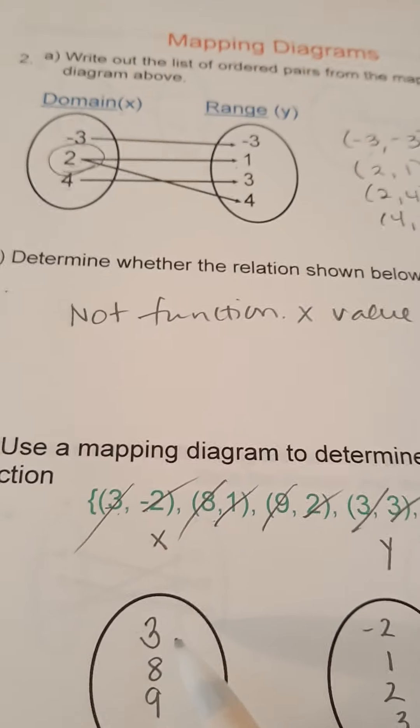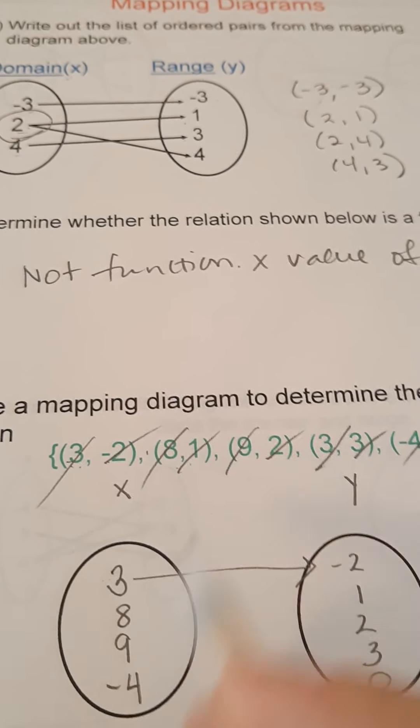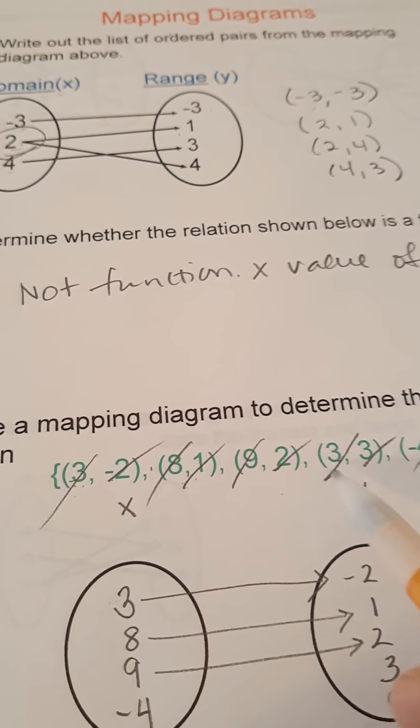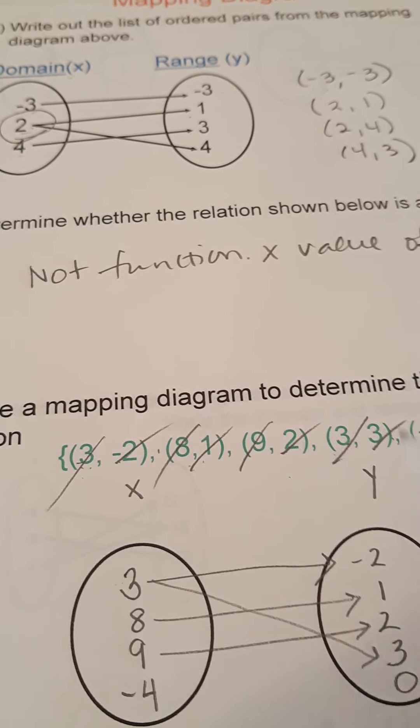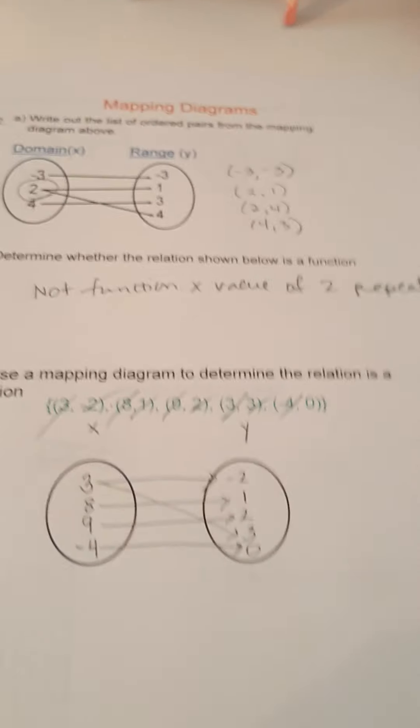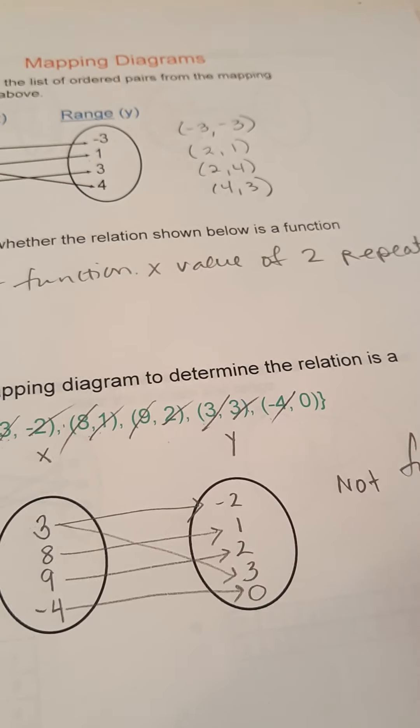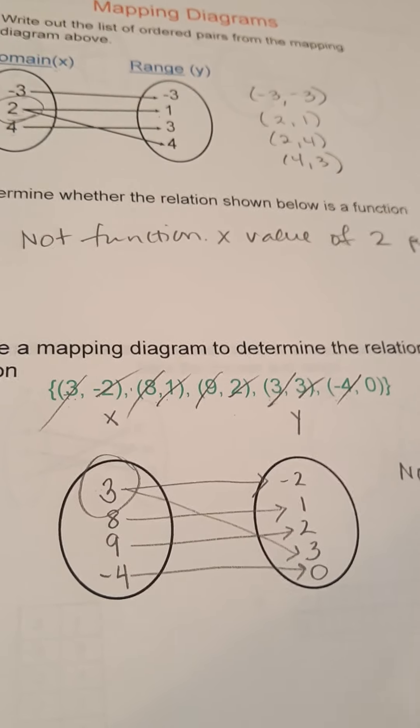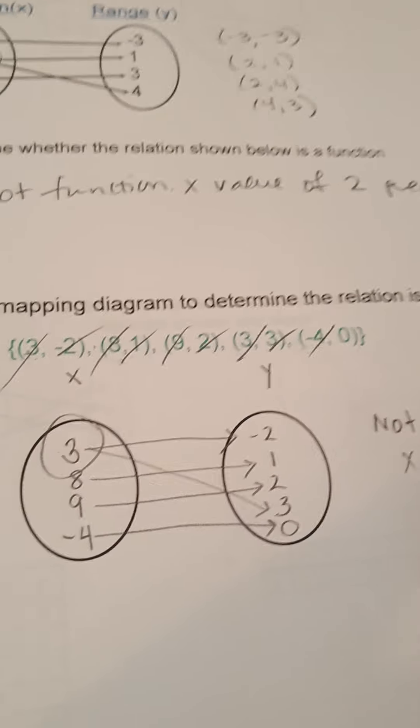Remember, when I make my mapping diagram, the 3 and the negative 2 go together. The 8 and the 1 go together. The 9 and the 2 go together. The 3 and the 3 go together. So, it is not a function. Because, if you notice, the 3 has 2 arrows going to it, right? So, the x value of 3 repeats.